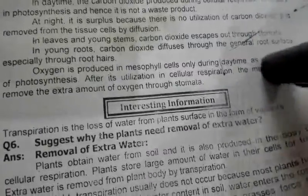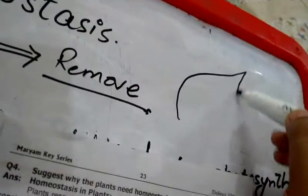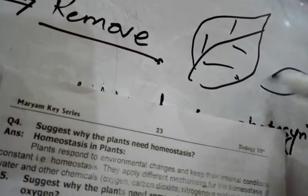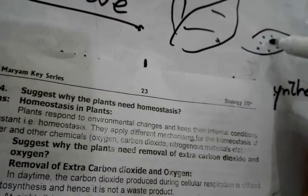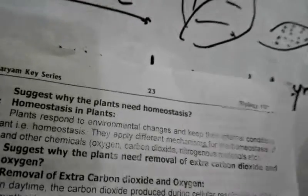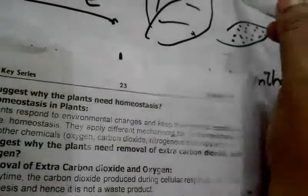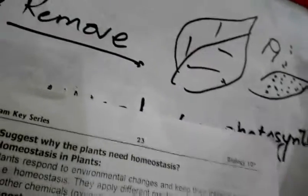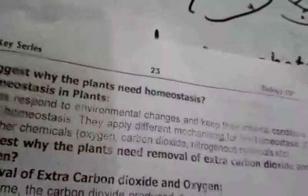In leaves and young stems, carbon dioxide escapes through stomata. What are stomata? Stomata are small pores — just consider the pattern on your leaf. Stomata are present beneath the leaf, on the lower part of the leaf. They are very small openings which we cannot see with the naked eye; they are only visible with the help of a microscope. These small pores open up and absorb sunlight, carbon dioxide, and anything required. They absorb what is needed and excrete what is not needed.